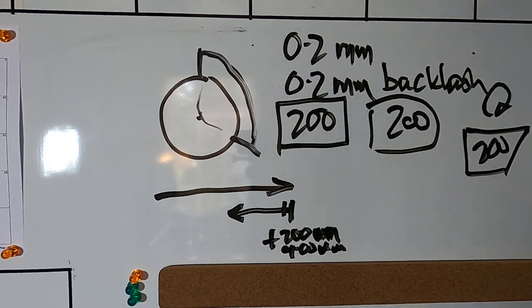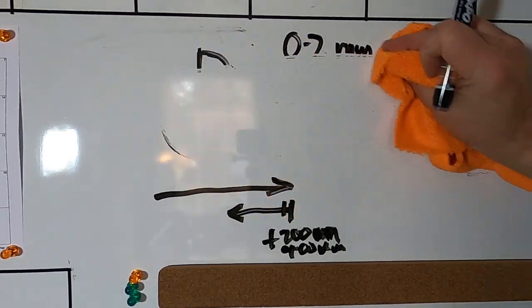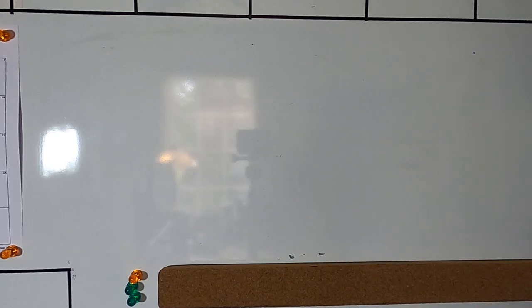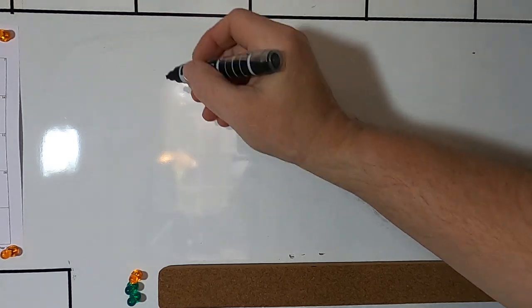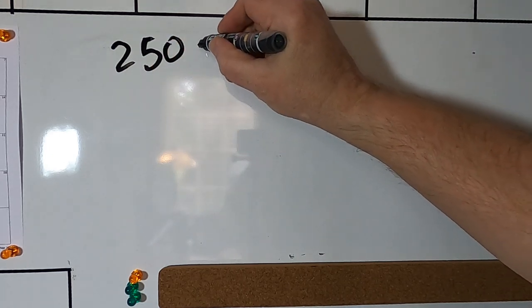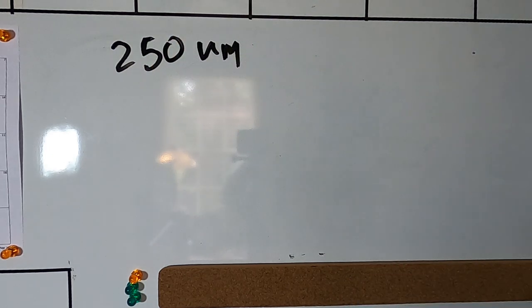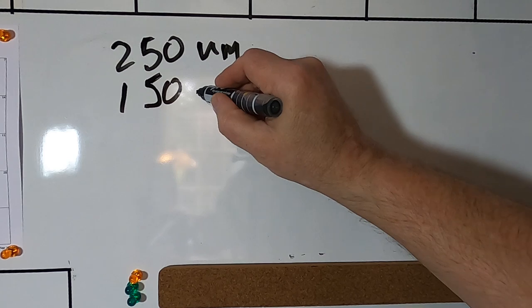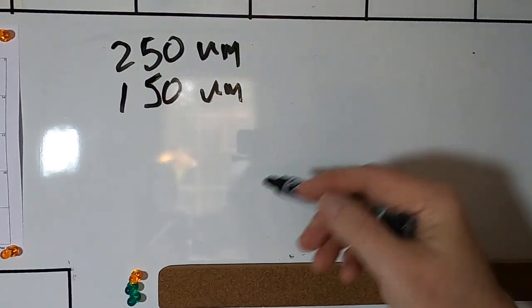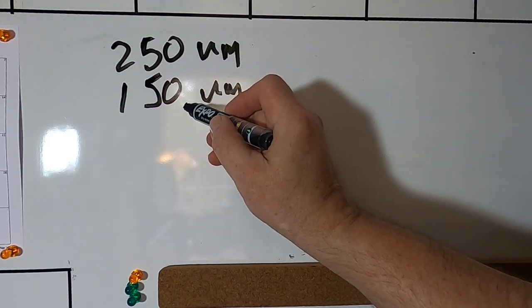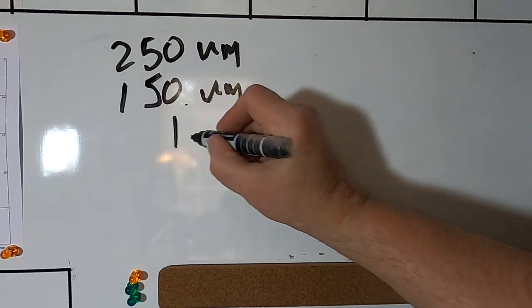Now where you get into trouble is when you're not moving at 200 micron steps, you're moving at 2 micron steps or 1 micron step. Then if your backlash, let's say that your actual backlash is 250 microns, but your backlash compensation is set at 150 microns.